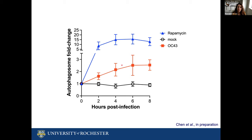This is encouraging. This may indicate that this particular coronavirus is somehow taking advantage of the autophagy machinery. However, this could also be interpreted differently — autophagy is not only important for cellular homeostasis, it's also a very important antiviral defense mechanism. So at this point, we are not sure if this increase in autophagosomes is virus-induced or is the cell responding to the infection.